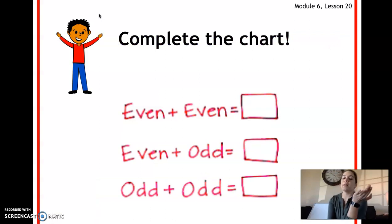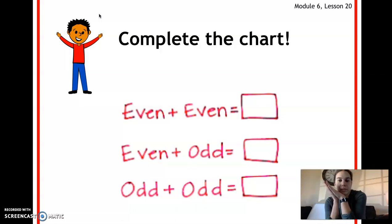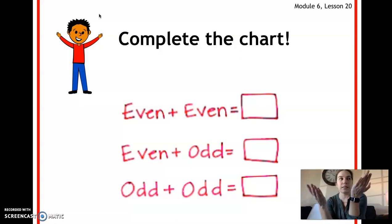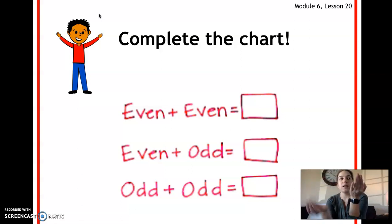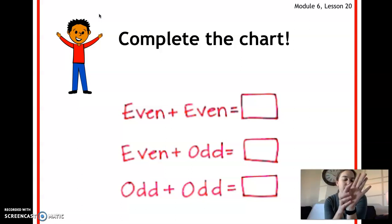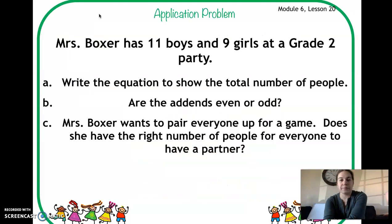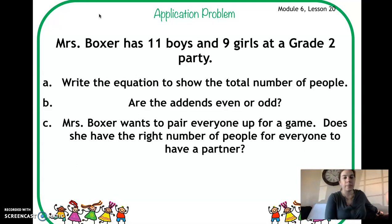So when you add an odd and an odd number together, you get an even number. Let's complete this chart: when we add an even number and an even number together, like six and four, our answer is even. When we add an even and an odd number together, like six and seven, the answer is odd. And when we add an odd and an odd number together, the answer is even.